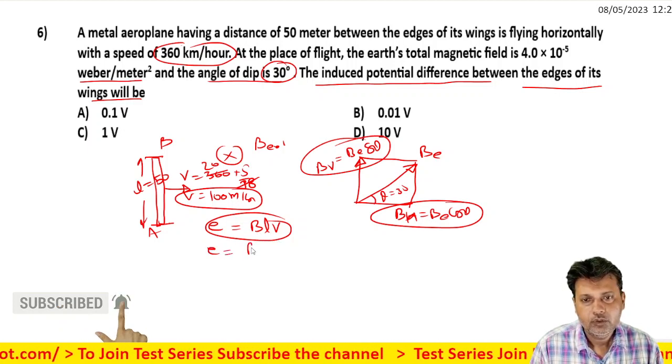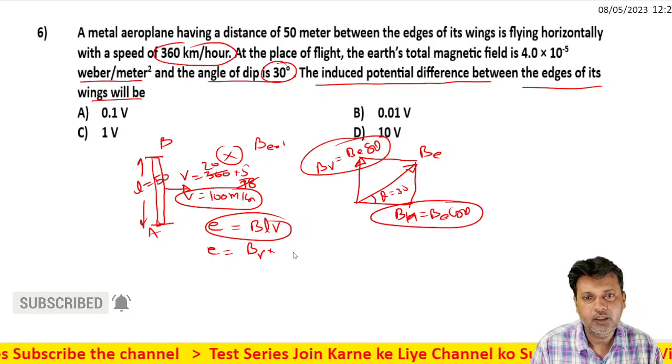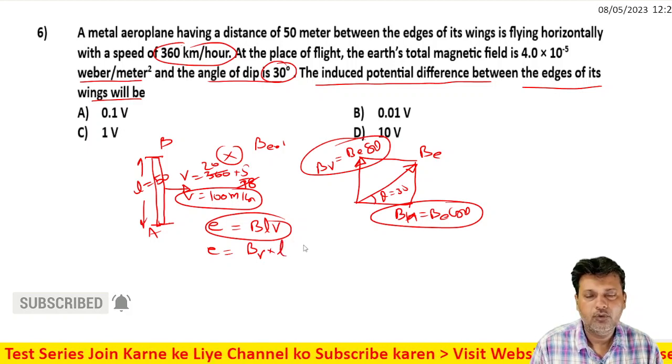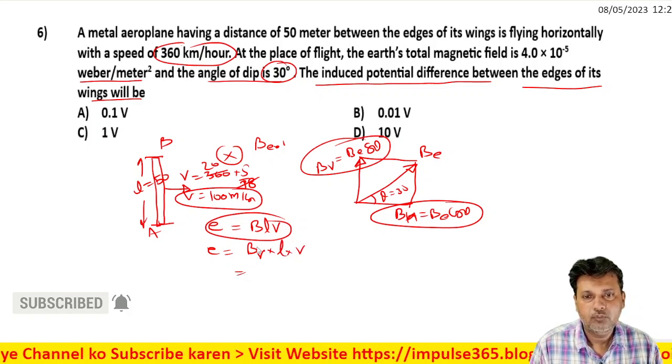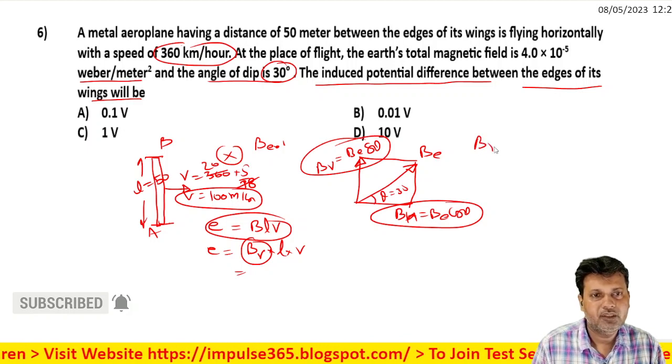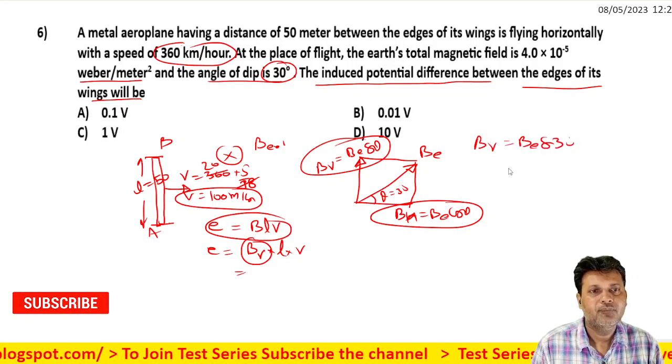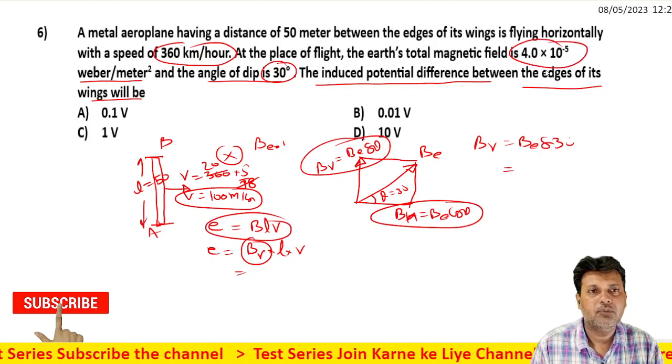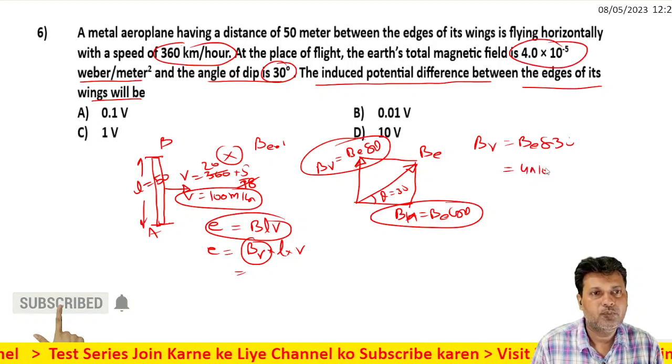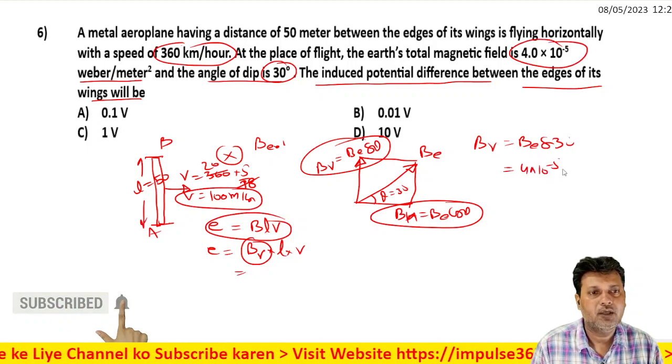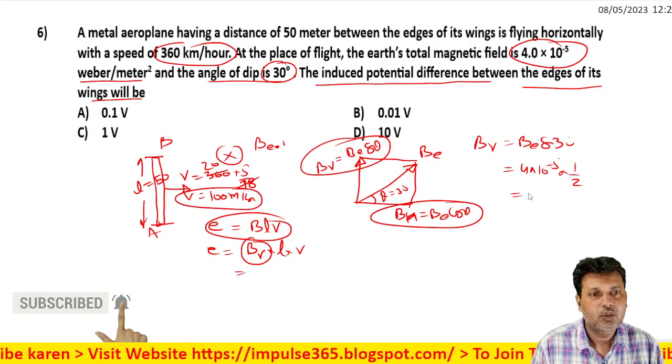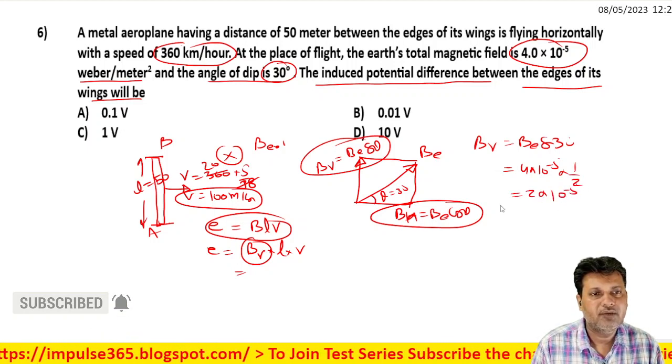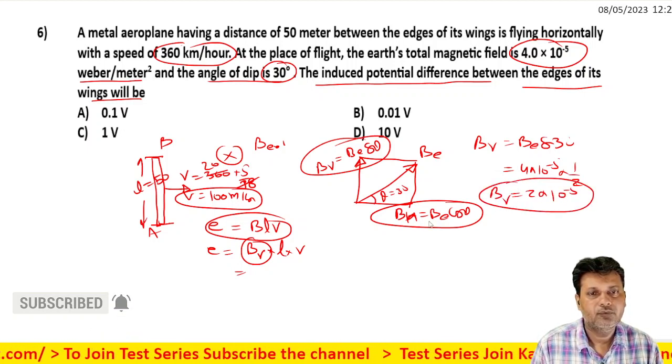The EMF equals the vertical component of magnetic field times the length times velocity. The vertical component BV = B sin 30° = 4 × 10^-5 × sin 30° = 4 × 10^-5 × 1/2 = 2 × 10^-5 Weber per meter squared.